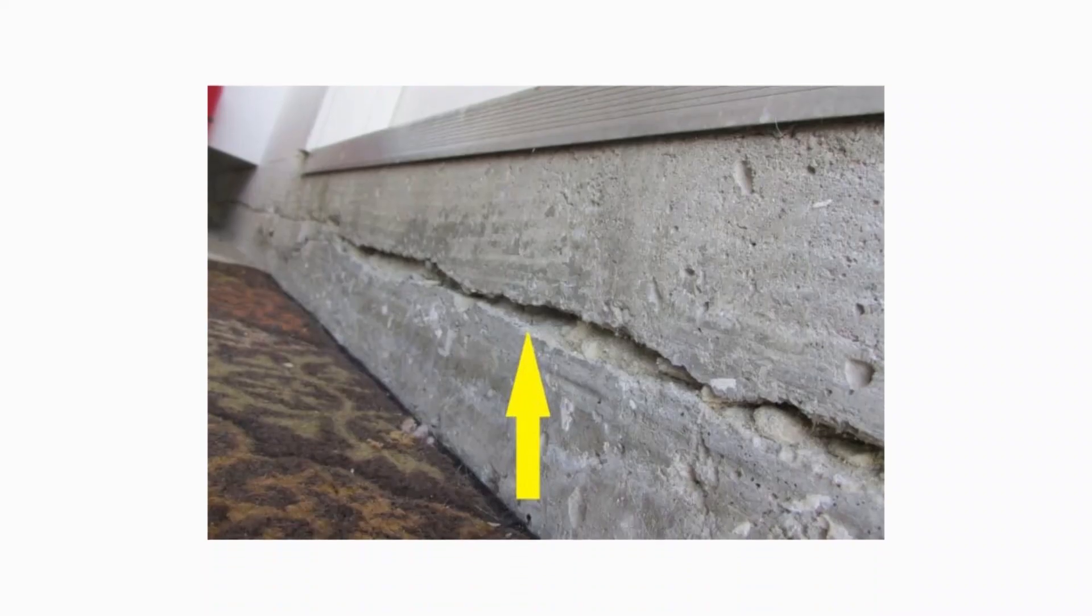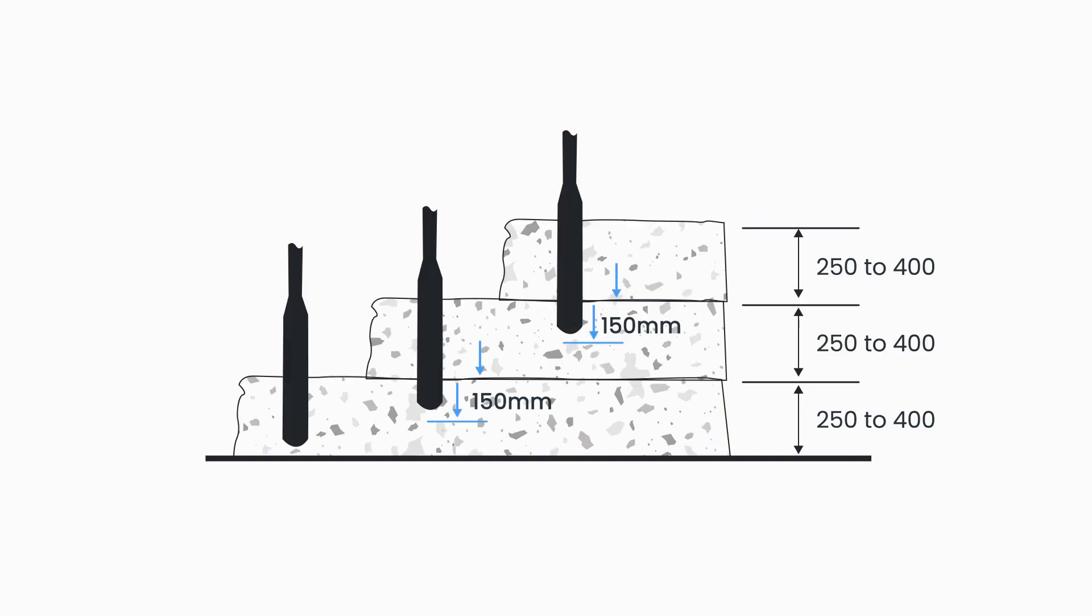Depending on the compaction equipment, thicker layers may be possible. Layers that are too deep make it virtually impossible to adequately compact the concrete, leaving trapped air which will result in voids and blowholes at the surface of the concrete, and prevent it achieving its potential durability and strength.